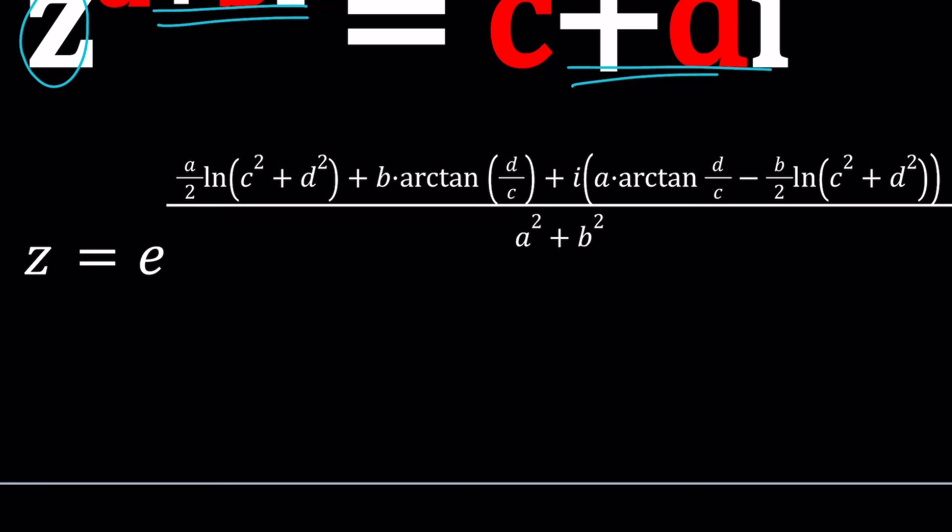So in our particular case, whenever you have something like z to the i equals 1 plus i, that just means that a is equal to 0, b is equal to 1, c is equal to 1, and d is equal to 1. So what does that mean? We can go ahead and use this formula, plug everything in, and solve it.